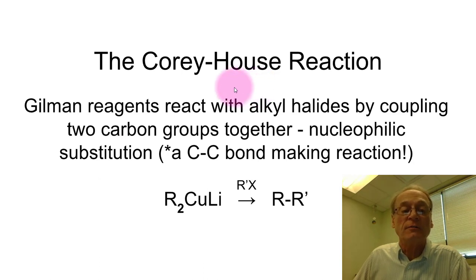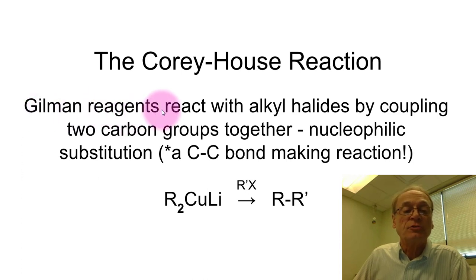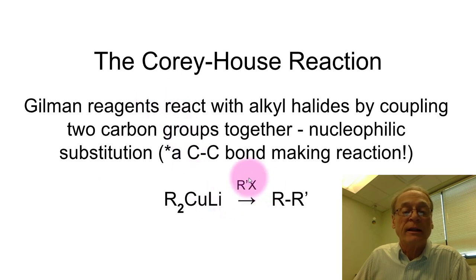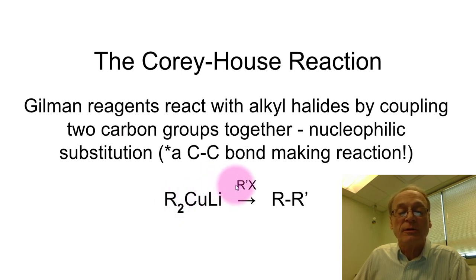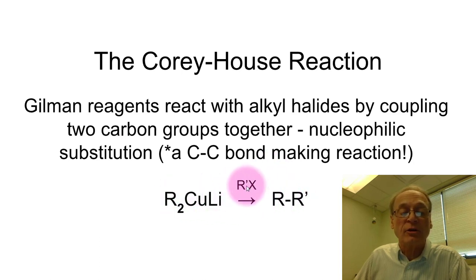This reaction involves starting with Gilman reagents, which are di-alkyl copper lithiums, and reacting them with an alkyl halide. The R group from the Gilman reagent acts as a nucleophile, attacks the back of the carbon of the alkyl halide, and pushes out the halogen.